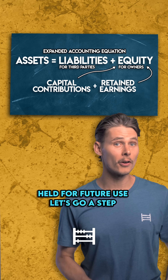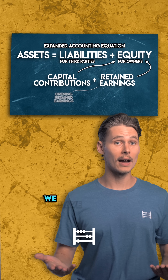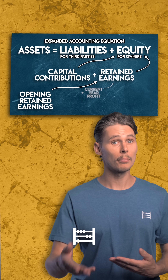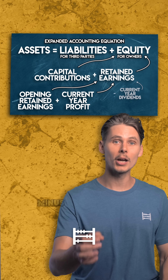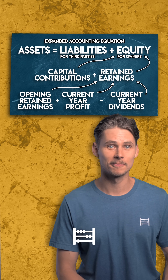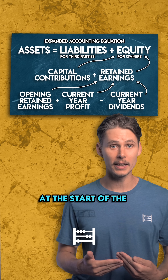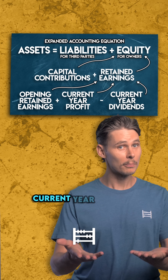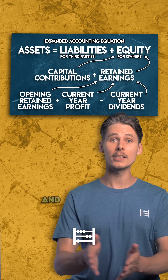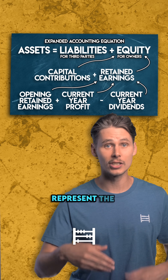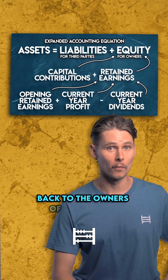Let's go a step further and see what feeds into retained earnings. We have opening retained earnings plus the current year profit or loss minus current year dividends. Opening retained earnings is the balance of retained earnings at the start of the year. Current year profit is the net income generated by the business to date. And current year dividends represent the distribution of profit back to the owners of the business.